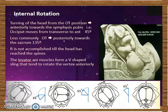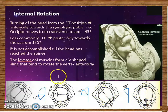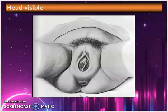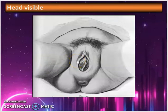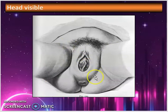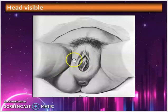The muscles responsible for this rotation are the levator ani muscles, which are V-shaped. This slide shows what we mean by right occipital transverse position: the right side of the mother is on this side and the left side on the other, meaning the fetus is in the right occipital transverse position.